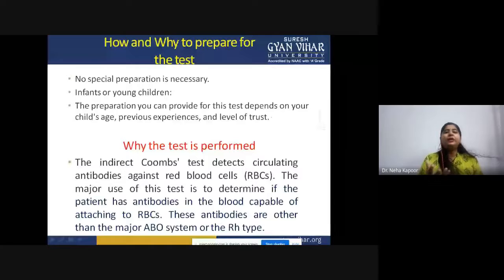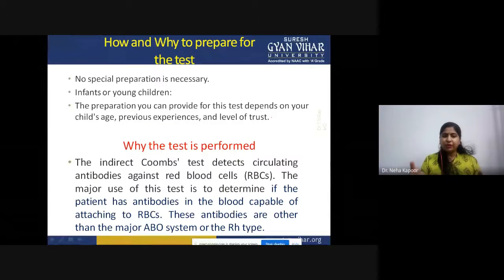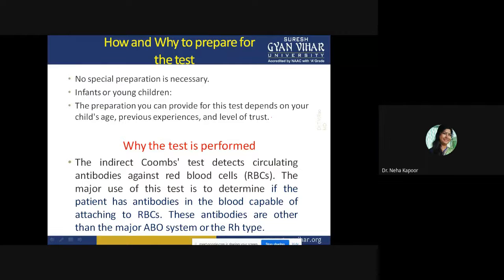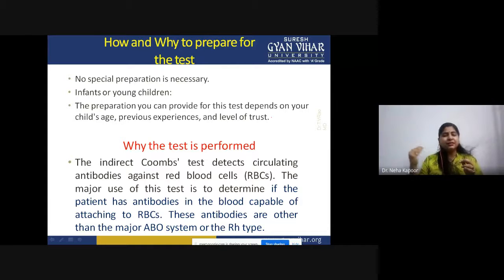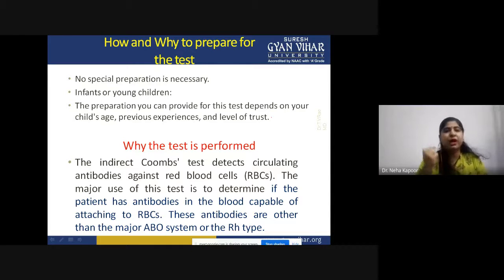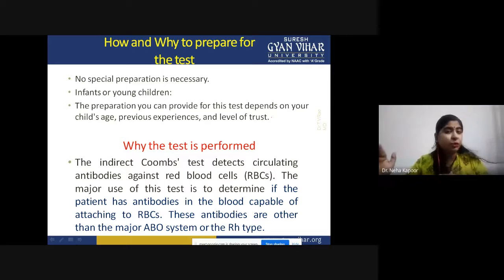We do not require any special kind of preparations for this test. We normally test this in cases of infants and young children. The most common use is the indirect Coombs test, which is used to detect circulating antibodies against RBCs. The major use of this test is to determine if the patient has antibodies in the blood capable of attaching to the RBC — that means they are free and continuously circulating in the blood.